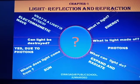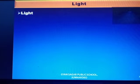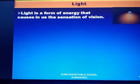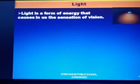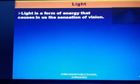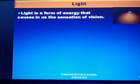Now come to the definition of light. Light is a form of energy that causes in us the sensation of vision. We have a sense organ — the eye — but only with the help of the eye we cannot see any object. We need a source of light to see any object. That's why light is very important for us in our daily life.